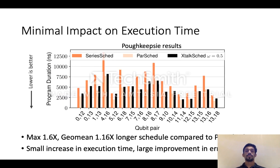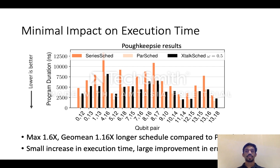How much does this impact execution time? We found that on average the impact is very low — program durations increase by about 1.16x, and in the worst case by about 1.6x compared to the parallel scheduler. This is a small increase in execution duration that we need to pay for. But for NISQ systems, reliable executions are far more important than executing them quickly. So we get this large increase in reliability of about 5x while paying only a small cost in terms of duration.